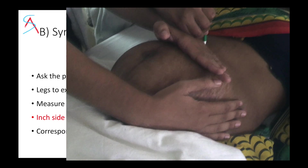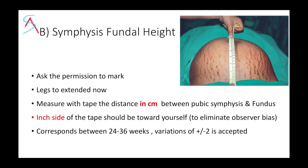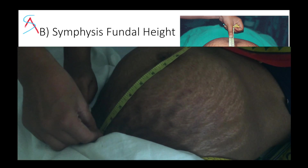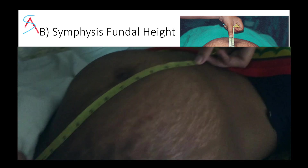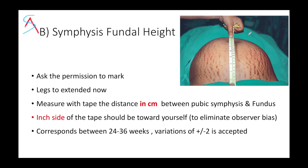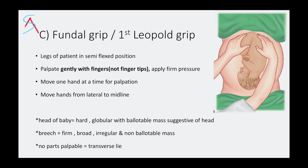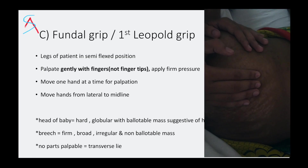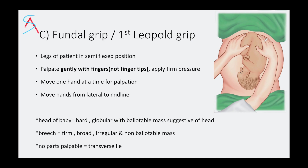For symphysis-fundal height, take consent from the patient to mark on her abdomen where you felt fundal resistance. Then ask the patient to extend her legs. Use the inside of the tape to eliminate observer bias and measure the distance in centimeters between the pubic symphysis and the fundus. Generally, it corresponds between 24 to 36 weeks, with a variation of plus or minus 2 accepted. Next is the fundal grip. Palpate gently — do not poke the patient, and move one hand at a time. If it is the head, mention it as a hard, globular, ballotable mass suggestive of head.